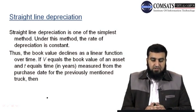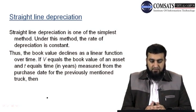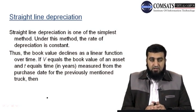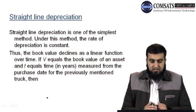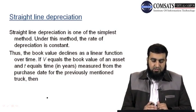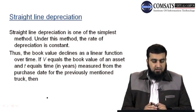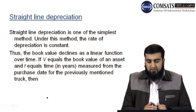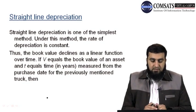Straight-line depreciation is one of the simplest methods. Under this method, the rate of depreciation is constant — as we saw in the previous example where the value decreases by $4,000 every year. Thus the book value declines as a linear function over time.